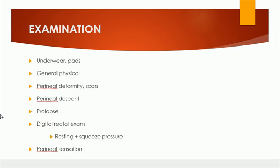On examination, we note underwear and pads that the patient is using. Then general physical examination assesses the health of the patient. When we examine the perineal area, we look for any perineal deformity, scars of trauma or surgery. We also look for any prolapse and any perineal descent.